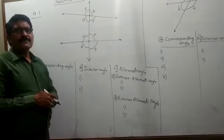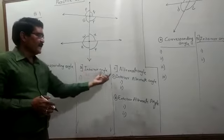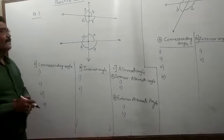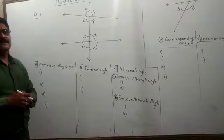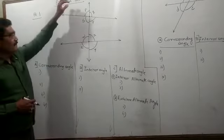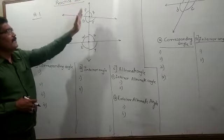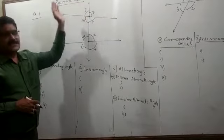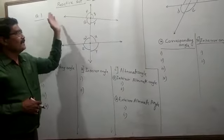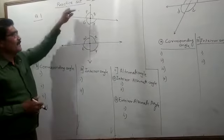But which are the corresponding angles, which are the interior angles, and which are the alternate angles — that you have to identify. I already explained the corresponding pairs. Now I will start with the corresponding pairs. Which are the corresponding angles with this transversal — to the right and to the left of the transversal? First of all, you have to find out the corresponding angles.